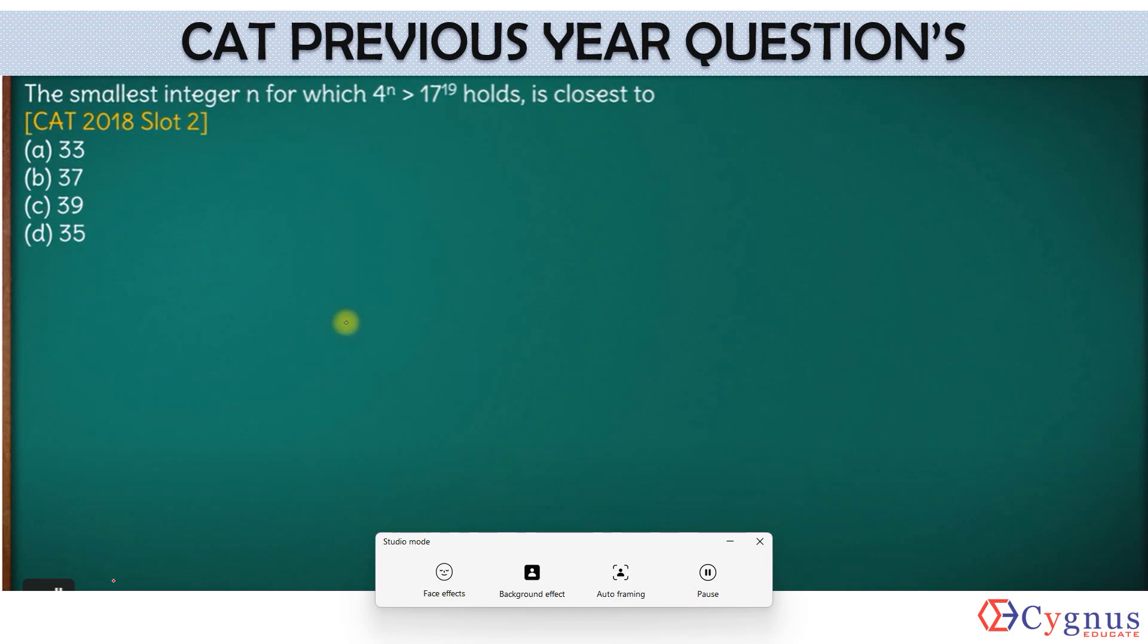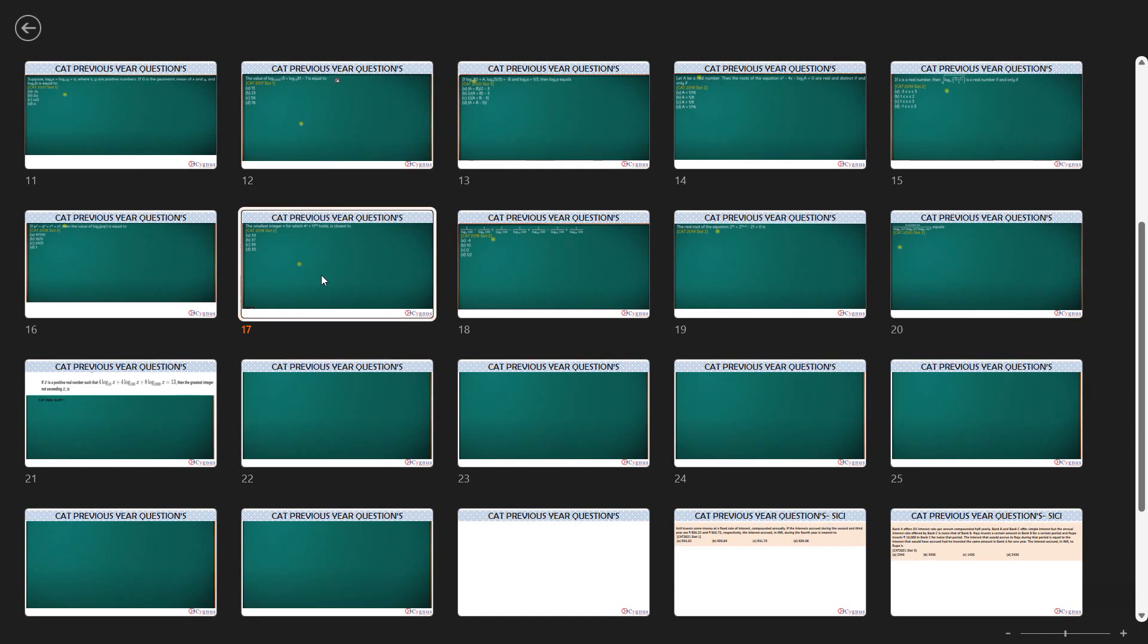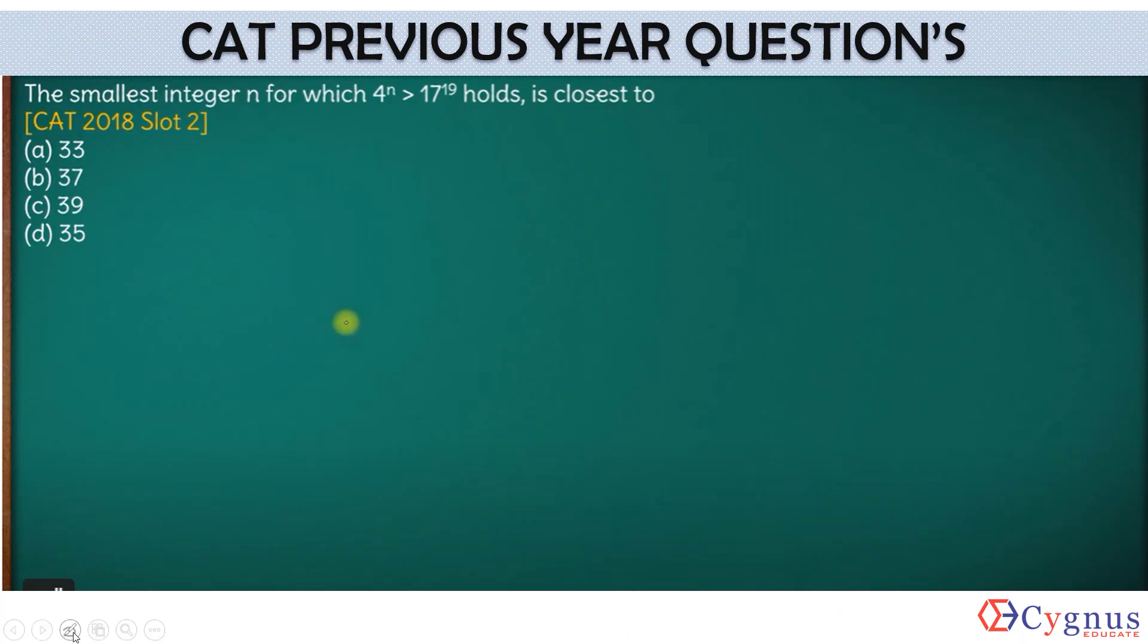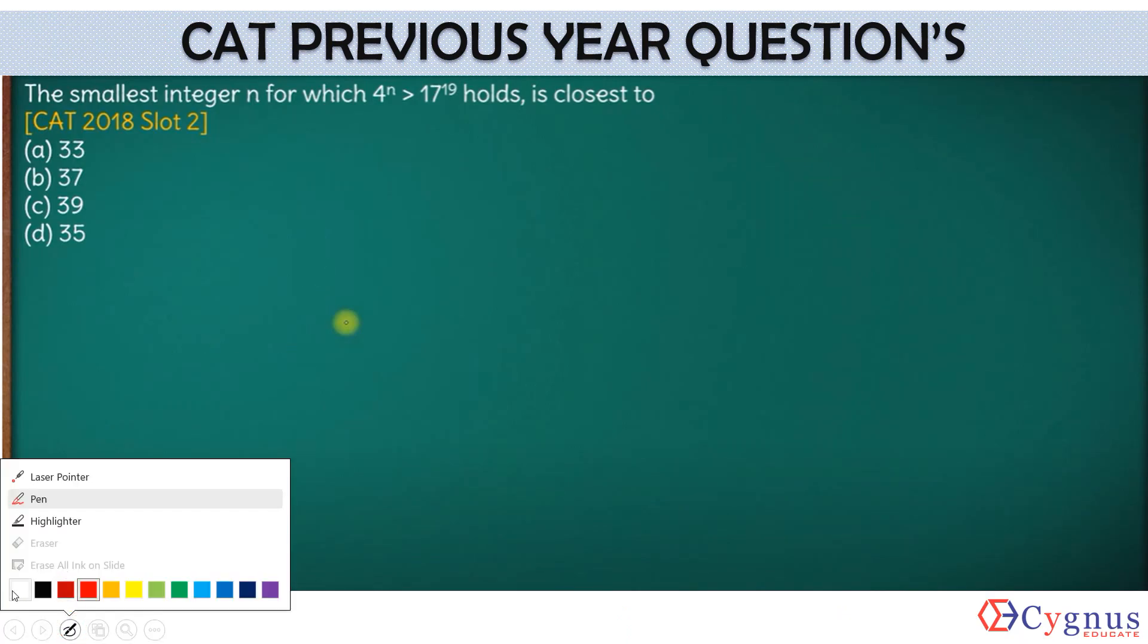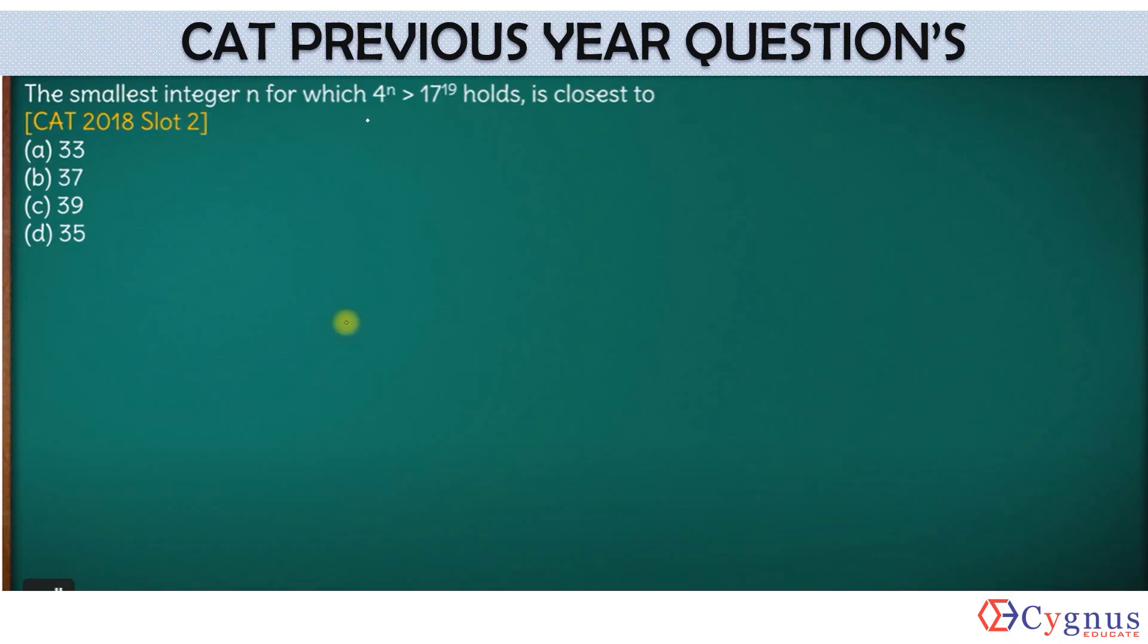Hi, this is a question from CAT 2018 Slot 2. If you look at the question, it says: the smallest integer n for which 4^n is greater than 17^19 is closest to. This seems like a question of inequality, but we'll find the application of log here.